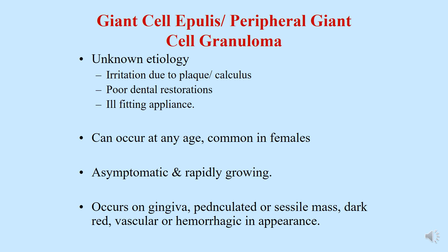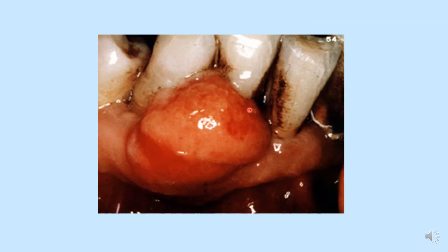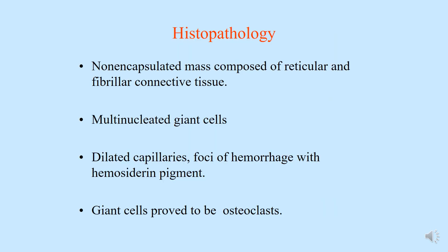Peripheral giant cell granuloma has an unknown etiology, though it has been attributed to irritation from plaque, calculus, poorly done dental restorations with overhangs or sharp edges, or ill-fitting appliances. It can occur at any age, is common in females, and the lesion is usually asymptomatic and rapidly growing. It occurs on the gingiva, may be pedunculated or sessile, and appears dark red, vascular, or hemorrhagic. This case shows a growth on the gingiva in the interdental mandibular anterior region.